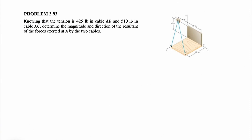Let's solve question 93 from the second chapter of the Beren Johnson textbook, Engineering Mechanics. We know that the tension in cable AB is 425 pounds and the tension in cable AC is 510 pounds. We need to determine the magnitude and direction of the resultant of these two forces exerted at point A.